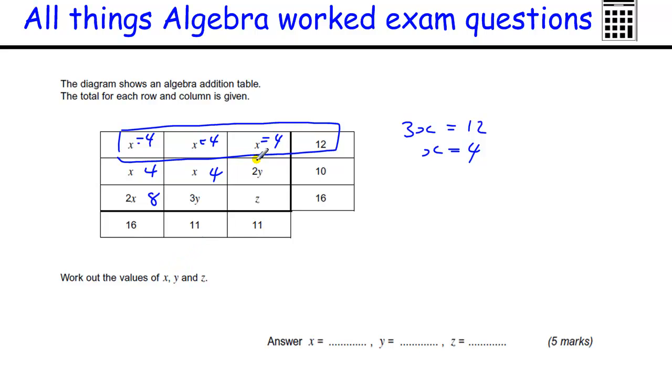Then we need to try and find the next one, which would probably be best to do with y. So we've got 4 plus 4 and 2y, so 8 plus 2y equals 10. That's what this row is telling us. We've got 8, 4 and 4 is 8, plus the 2y equals 10. So what do we have to add to 8 to get 10? Well, we have to add 2 to 8 to get 10. And 2 lots of what is 2? Well, that's 1. So y is 1, so 2y equals 2.